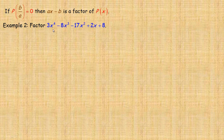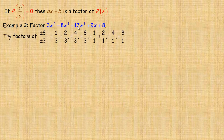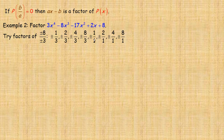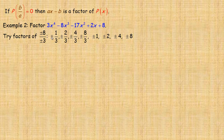In this example, we're asked to factor 3x to the 4th minus 8x cubed minus 17x squared plus 2x plus 8. We'll try factors of plus or minus 8 over plus or minus 3. The factors of 8 are 1, 2, 4, and 8 over the factors of 3, which are 3 or 1. Since denominators of 1 simplify, we also try plus or minus 1, plus or minus 2, plus or minus 4, and plus or minus 8 — giving us 16 possible values.